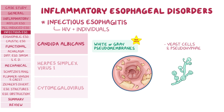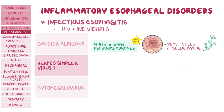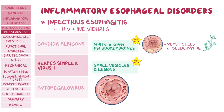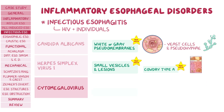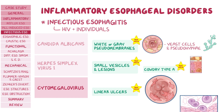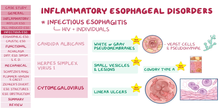Any attempt to remove the pseudomembrane can cause bleeding in the underlying mucosa. With HSV esophagitis, a high yield fact is that upper endoscopy will show small vesicles and lesions that look like small punched-out ulcers, while histopathology reveals eosinophilic intranuclear inclusions in multinuclear squamous cells at the margin of the ulcer. These inclusions are called Cowdry type A inclusions. CMV esophagitis features linear ulcers on upper endoscopy, while histopathology reveals both intranuclear and cytoplasmic inclusions.